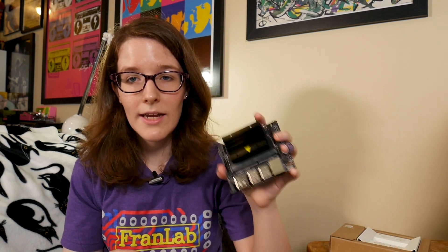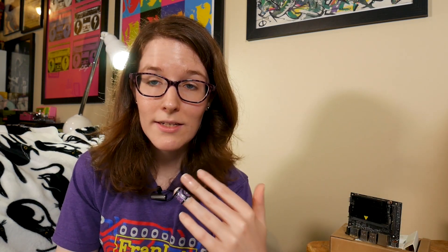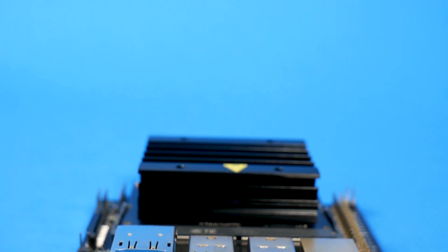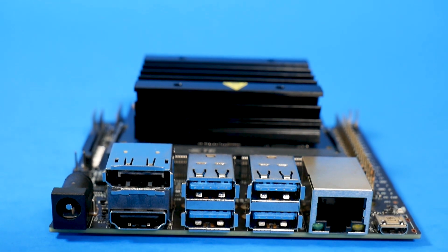Now that we understand where we are a little better, let's talk about the Nano hardware and take a grand tour of specs. It has a 64-bit quad-core ARM A57 CPU clocked at 1.43 GHz. The GPU is a 128-core NVIDIA Maxwell clocked at 921 MHz. There are 4GB of DDR4 RAM on board clocked at 1600 MHz. For I/O we have 4 USB 3.0, HDMI, DisplayPort, and a 40-pin GPIO whose pinout matches the Raspberry Pi's, so you can use hats on this if you wanted to.